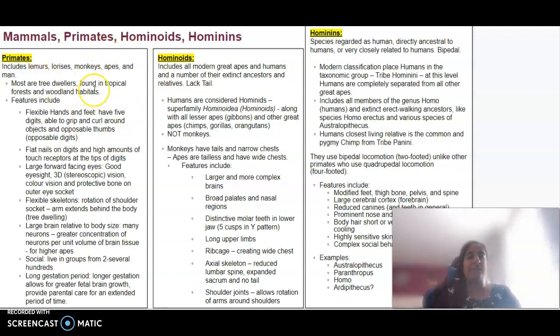A primate is basically an animal that is a tree dweller. They are found in tropical forests and woodland habitats. Things like lemurs, lorises, monkeys, apes, and humans all fall under the category of a primate. Their features include flexible hands and feet, flat nails, forward-facing eyes and 3D vision, flexible skeletons so they can rotate their shoulder sockets, a large brain relative to their body size, they are very social beings, and they have quite a long gestation period which allows for brain development and provide parental care over an extended period of time.